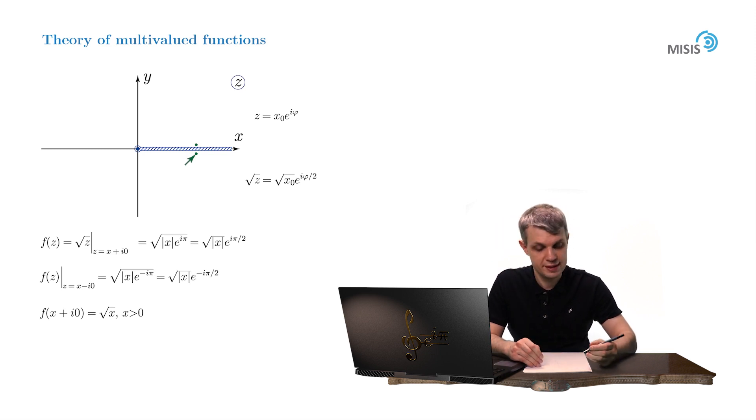Then on the lower bank, at almost the same point, f(x - i0) is equal to the square root of x times e^(2πi), which yields square root of x with negative sign.